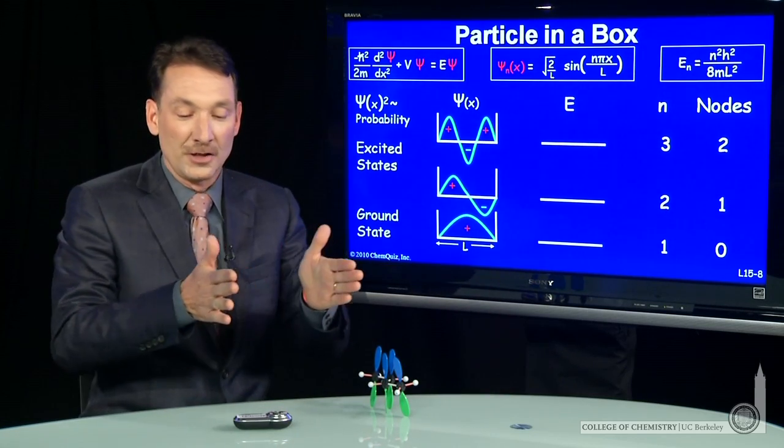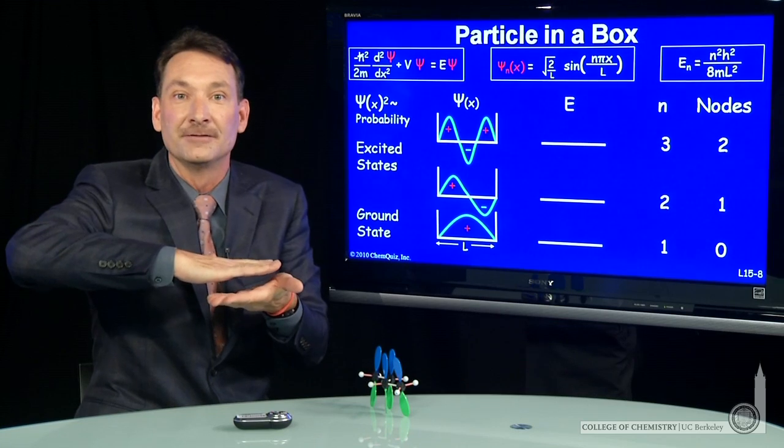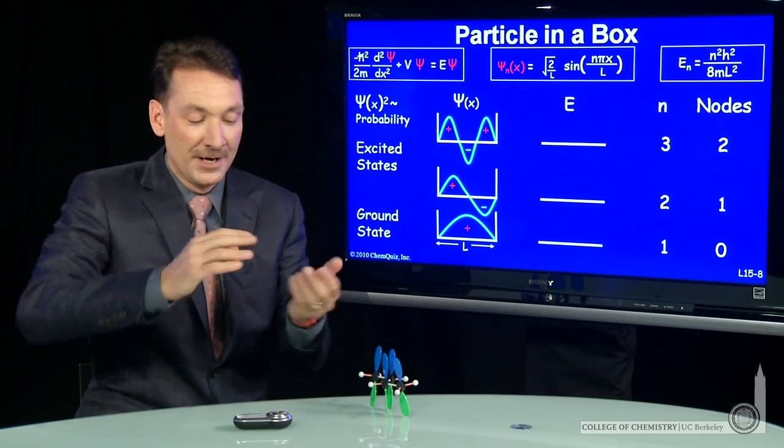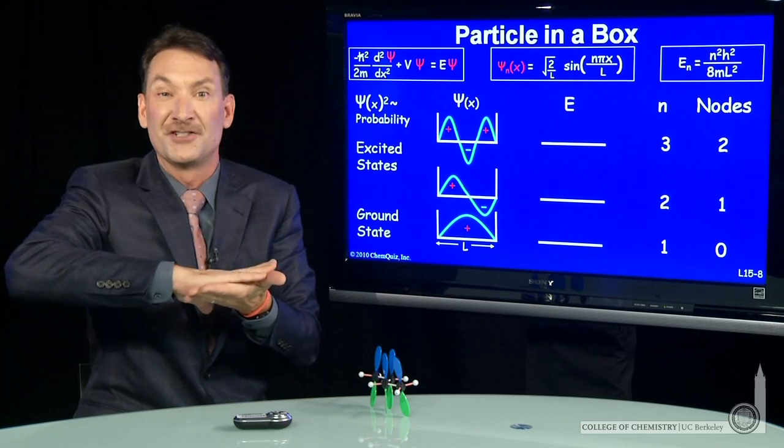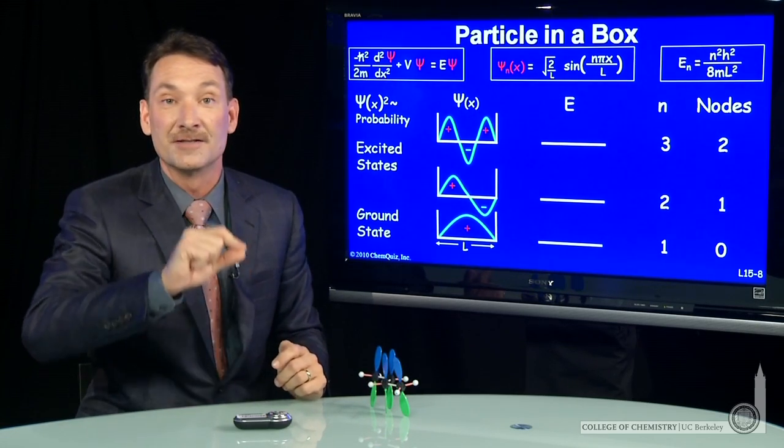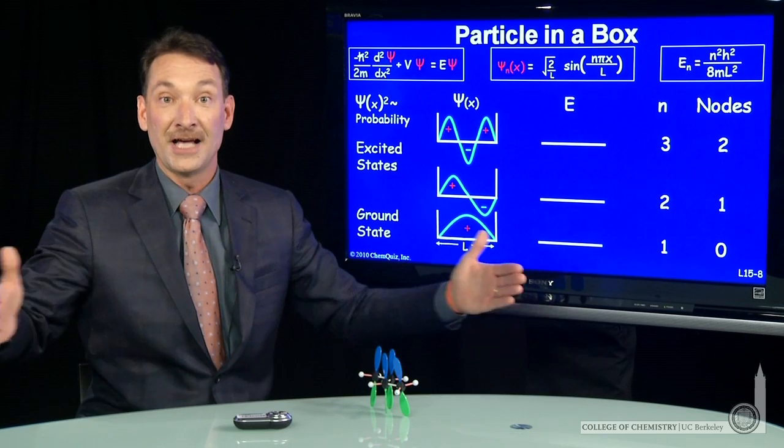So longer boxes, the energy levels start to come closer together. They get closer together, and when you get to a very big box, the energy levels are stacked right on top of each other and virtually become continuous. And that's where you'd make the transition from quantum mechanical to classical.